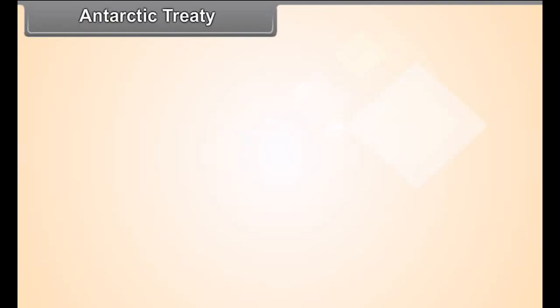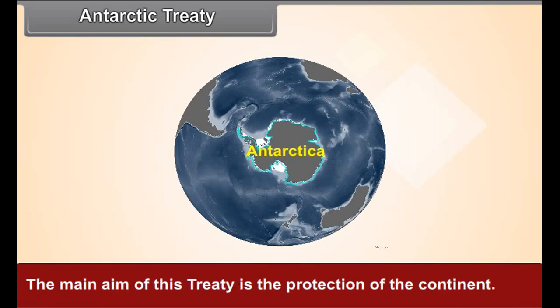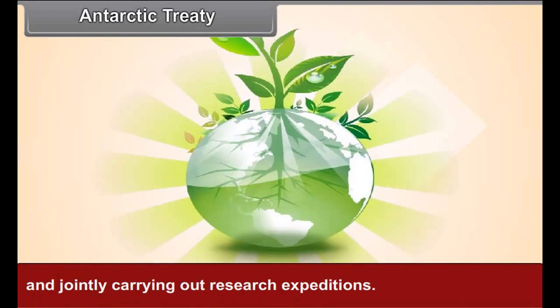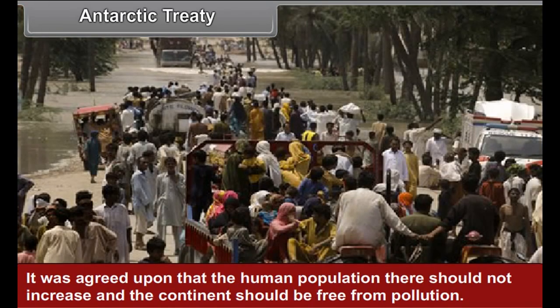Antarctic Treaty: In 1959, 12 nations signed the Antarctic Treaty. The main aim of this treaty is the protection of the continent. It also has other objectives such as protecting the natural resources, conserving the environment, and jointly carrying out research expeditions. It was agreed upon that the human population there should not increase and the continent should be free from pollution.